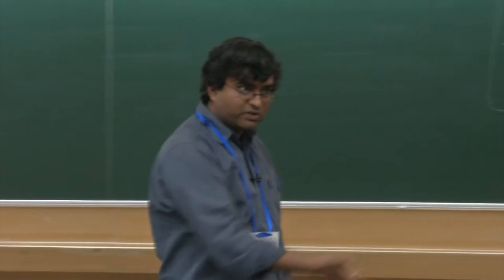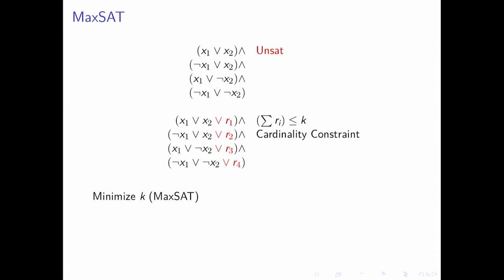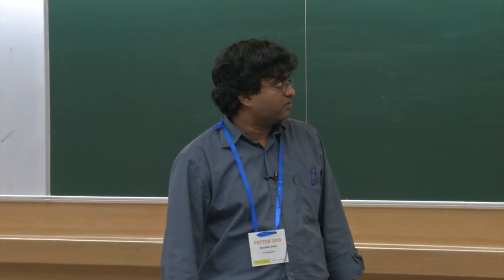Since this is not the original formula, we add an additional constraint: satisfy the formula using the least number of Ri's. When Ri is 1, the original constraint was not satisfied; when Ri is 0, it was satisfied. This is the cardinality constraint, and the goal is to minimize K — the number of relaxation variables set to true.